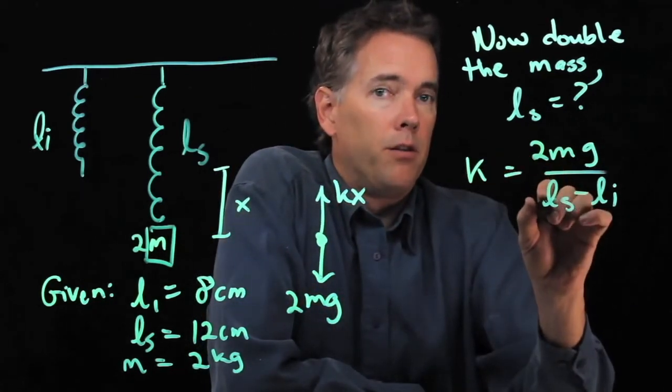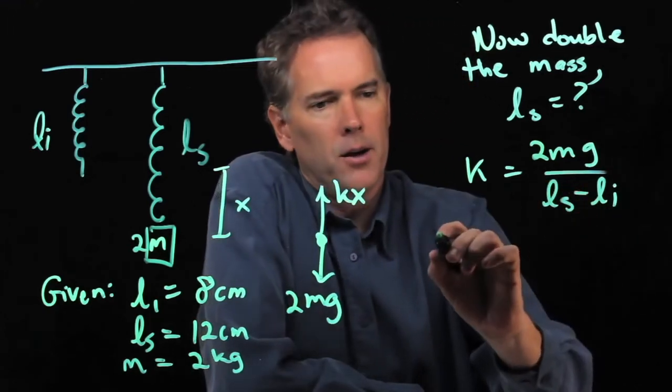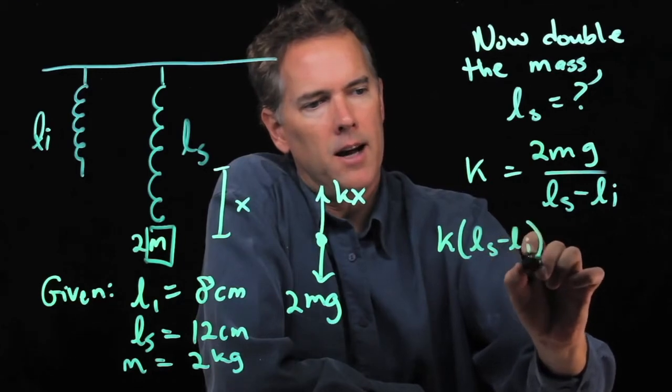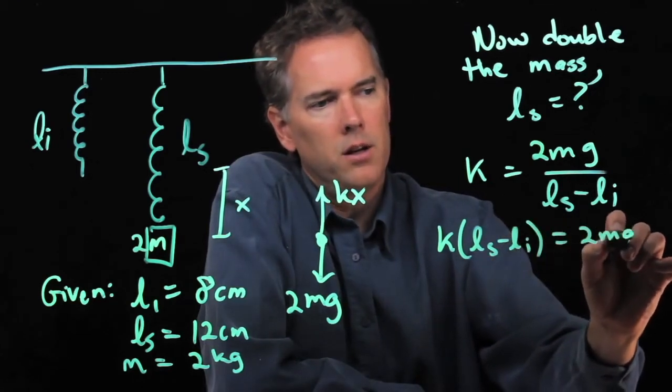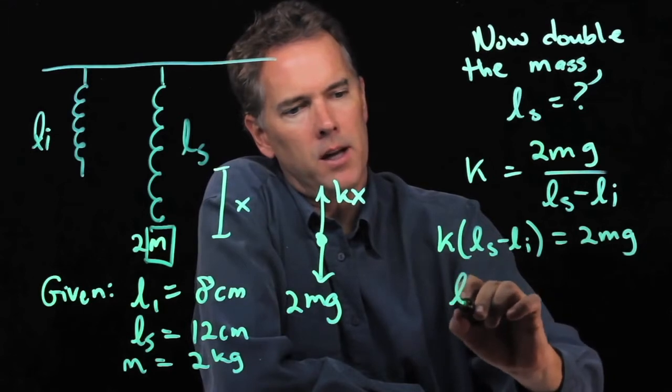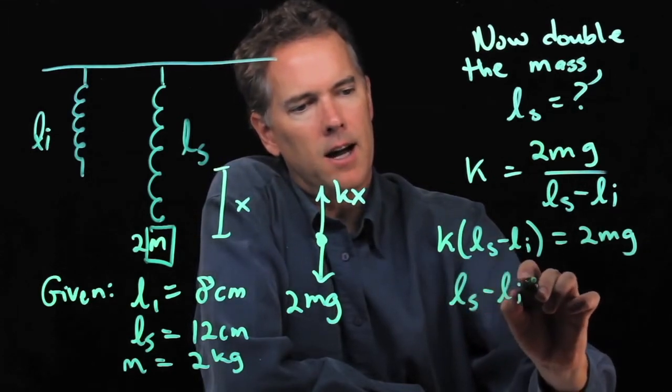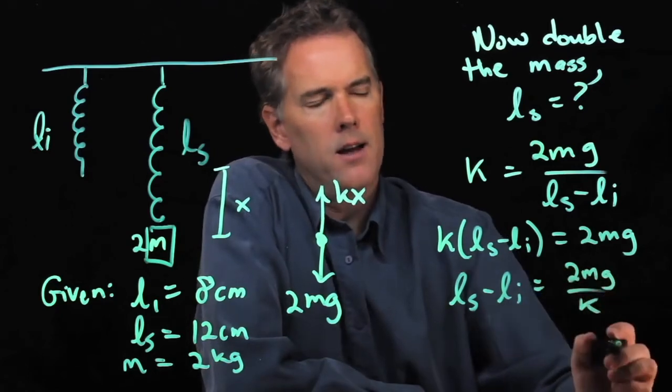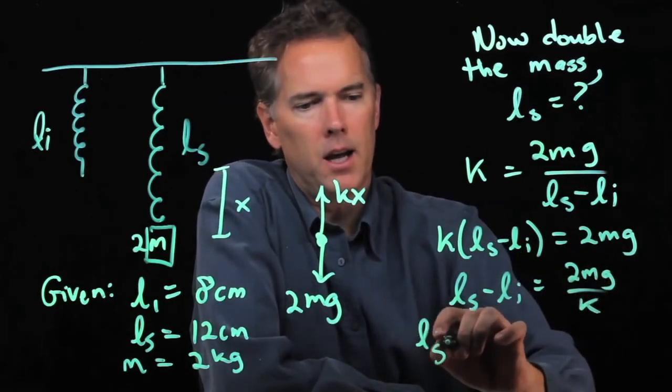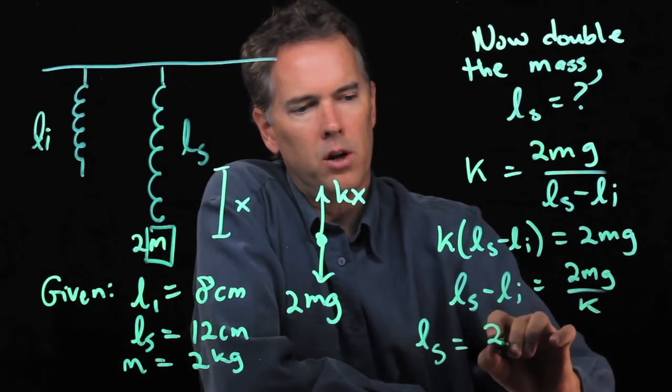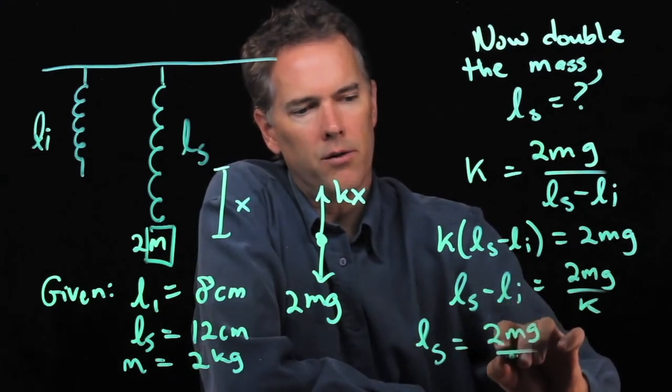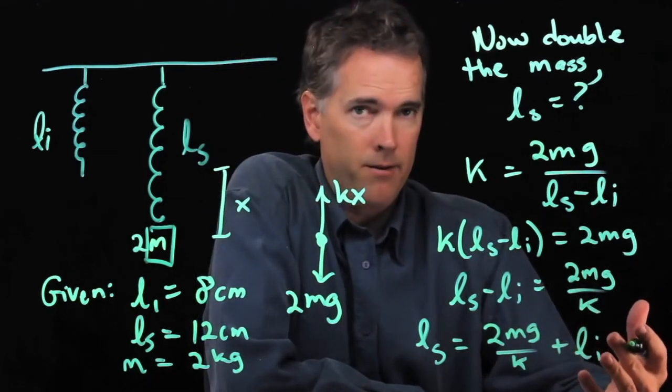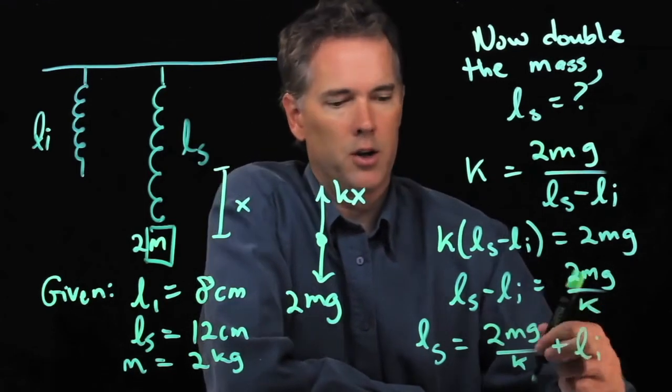Now we want to solve this for ls. So we can do that. Let's multiply across by that quantity. We get k ls minus li equals 2mg. We can divide by k. So we get ls minus li equals 2mg over k. And then we can add li. So we get ls equals 2mg over k plus li. And now we have all those numbers. We can plug it in and try it.